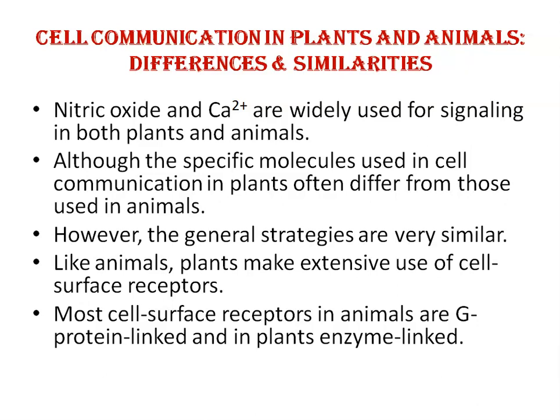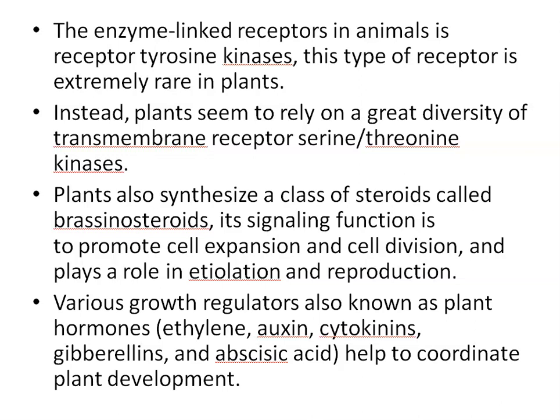For example, nitric oxide and calcium ions are widely used for signaling in both plants as well as animals. Although the specific molecules used in cell communication in plants often differ from those used in animals, the general strategies are similar in both cases. Like animals, plants make extensive use of cell surface receptors. Most cell surface receptors in animals are G protein linked, while in plants, enzyme-linked receptors are there. The enzyme-linked receptor in animals is receptor tyrosine kinases, but this type of receptor is extremely rare in plants. Instead, plants seem to rely on a great diversity of transmembrane receptor serine-threonine kinases.